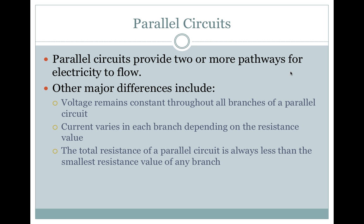Parallel Circuits provide two or more pathways for electricity to flow. Other major differences include: voltage remains constant throughout all branches of a parallel circuit; current varies in each branch depending on the resistance value; and the total resistance of a parallel circuit is always less than the smallest resistance value of any branch.